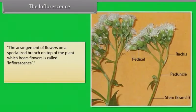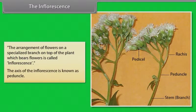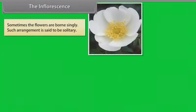The inflorescence is the arrangement of flowers on a specialized branch on top of the plant which bears flowers. The axis of the inflorescence is known as the peduncle. Sometimes the flowers are borne singly; such arrangement is said to be solitary.